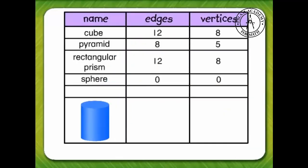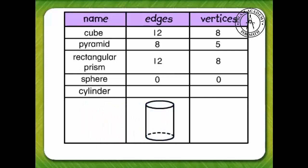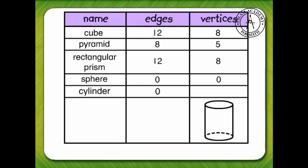Here's the last figure. Name that figure. It's a cylinder. How many edges does a cylinder have? There are no edges to count. A cylinder has zero edges. How many vertices does a cylinder have? A cylinder has zero vertices.